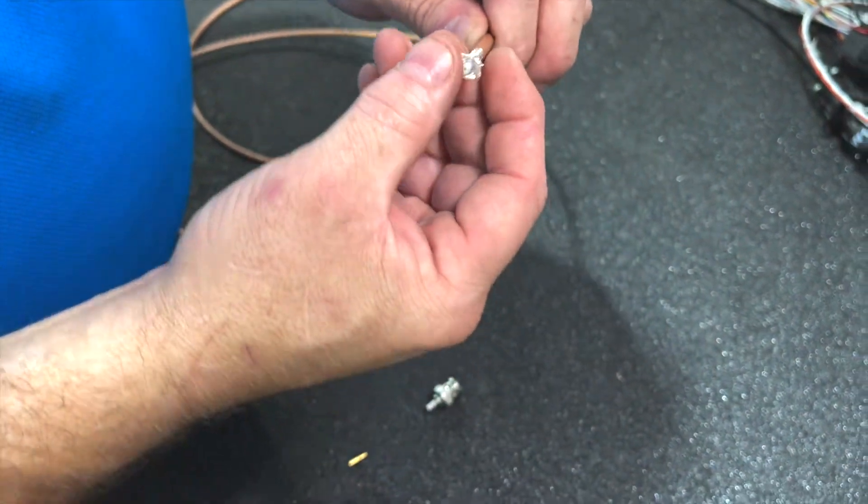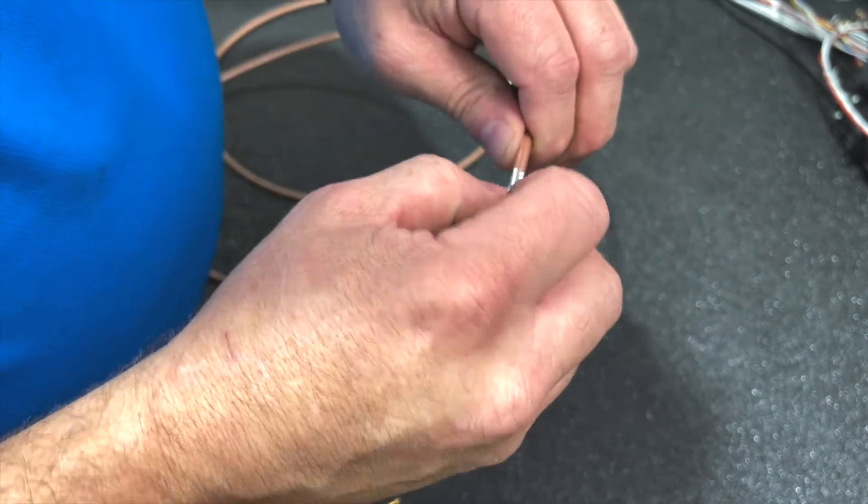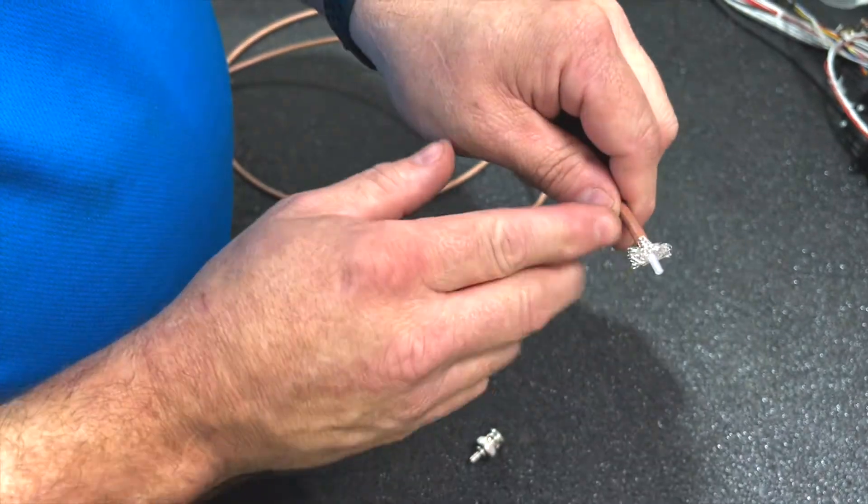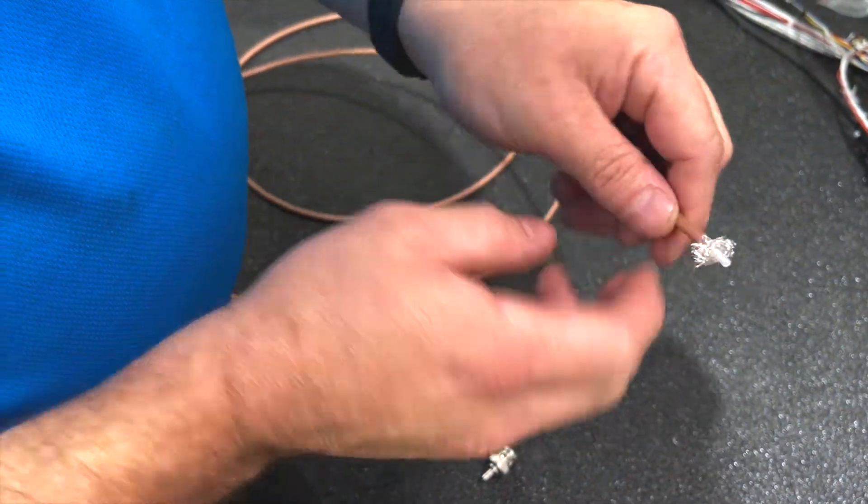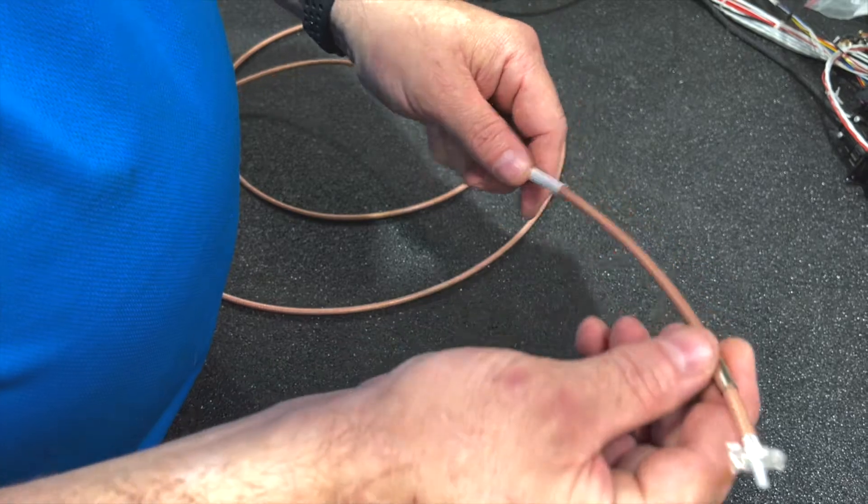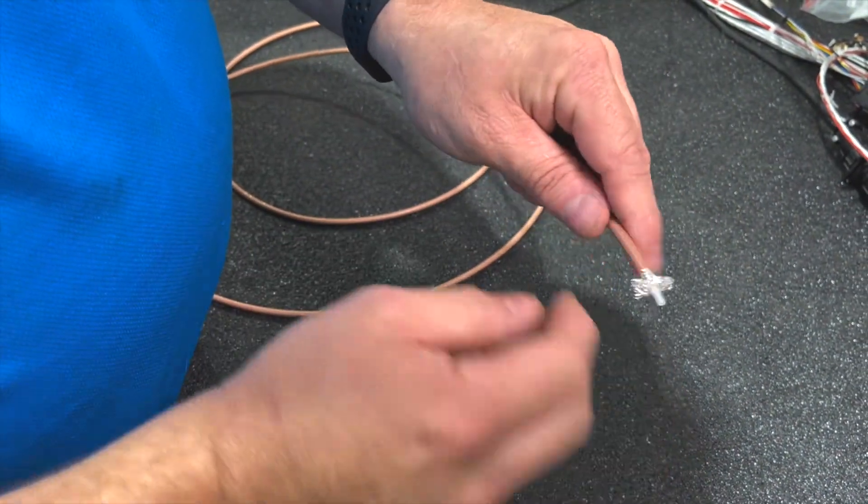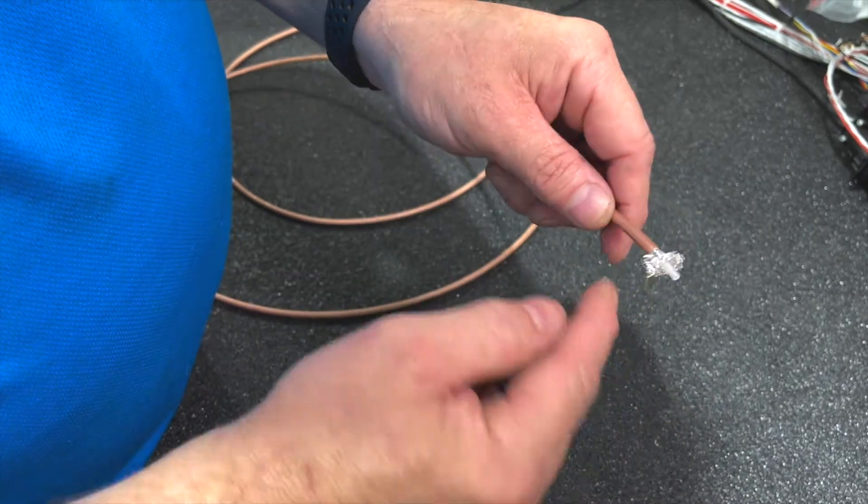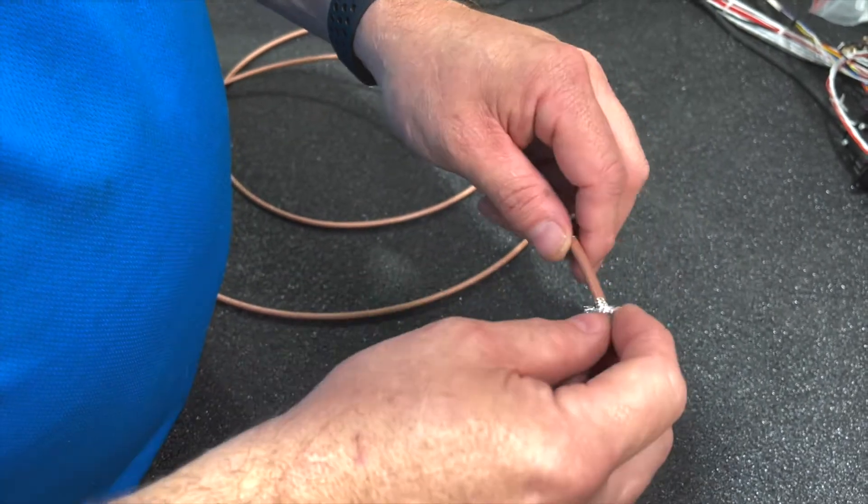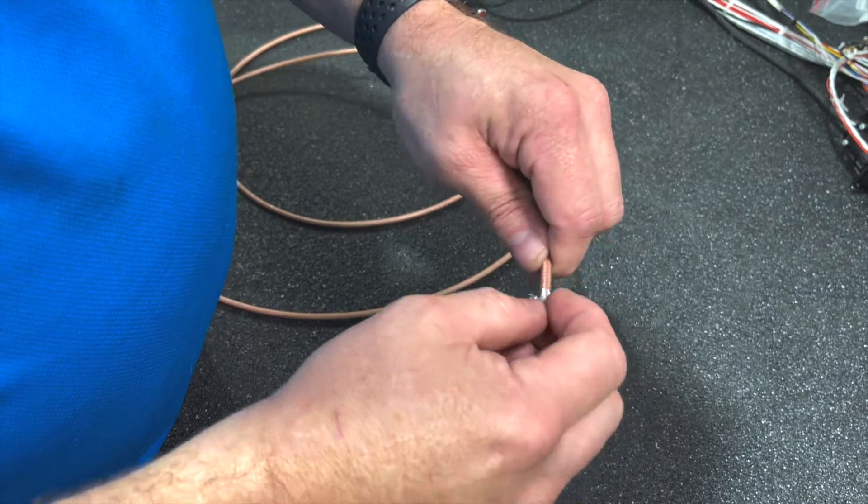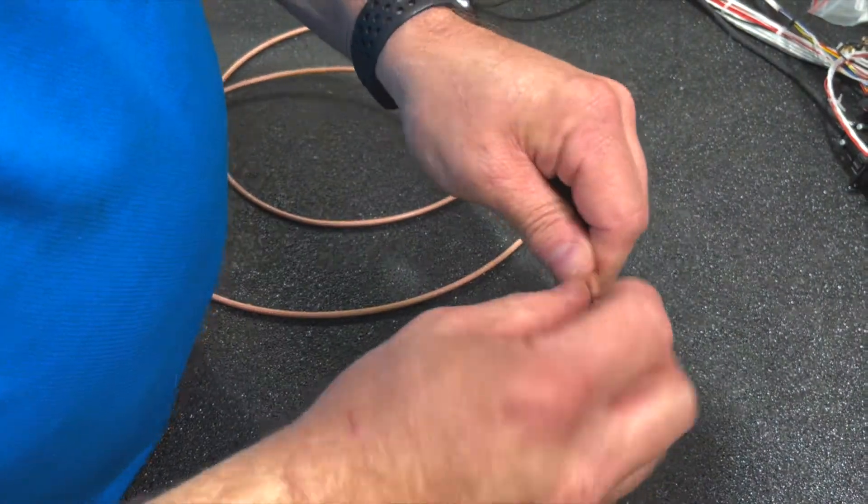Next thing we're going to do is push back the shielding. You don't want to cut this too far back, because then when we go to crimp on this sleeve, you'll have some shielding exposed and it makes for a weak joint. So we want to make sure we start about a half inch. If we have to take more off we can do that. You can't add it back on.